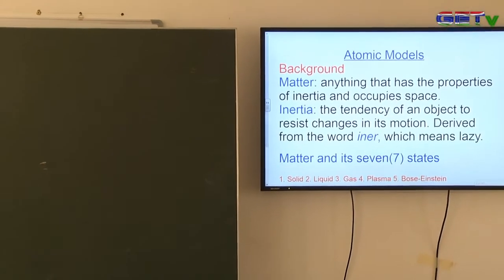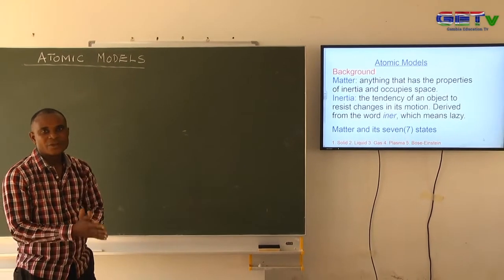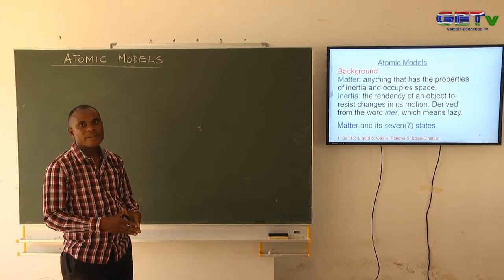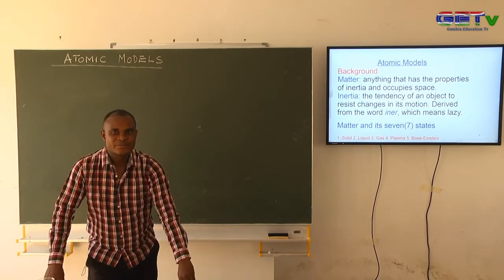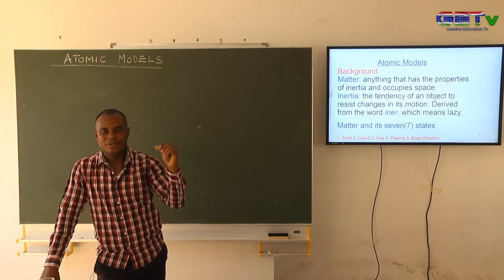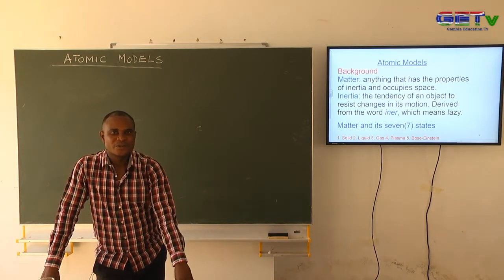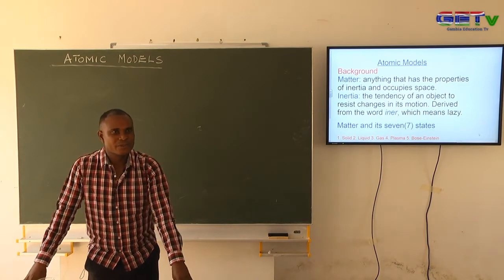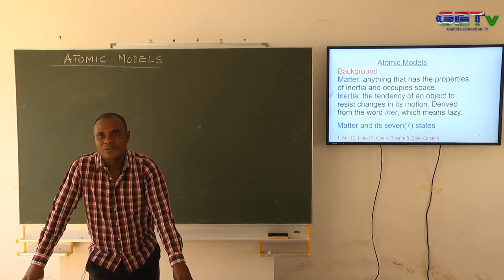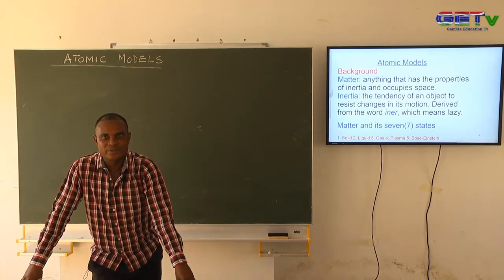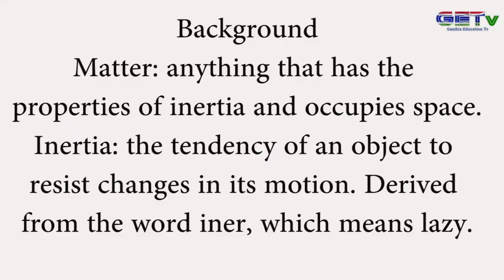I want us to start from the background first of all. The topic says atomic models, so you can see the word atom from there. The atom must have come from something. Scientists believe that everything in the universe is made up of two things: the atom and the void in which that atom resides. So what is matter? Matter is anything that has the property of inertia and occupies space.